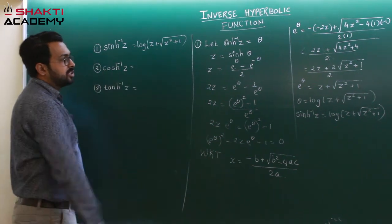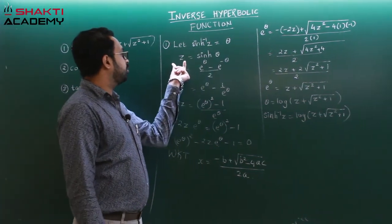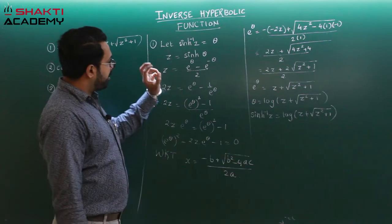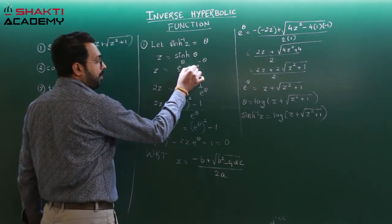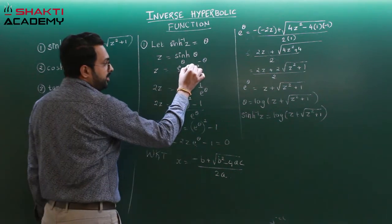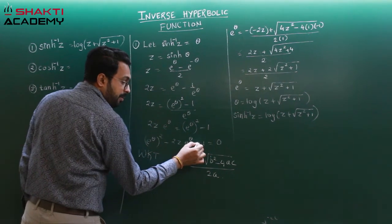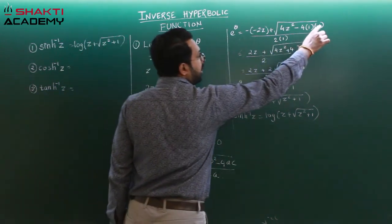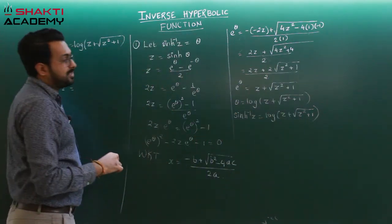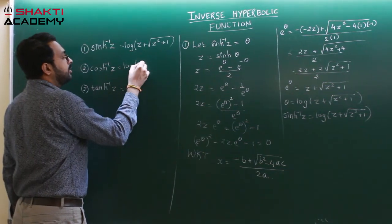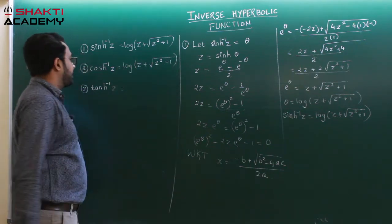Now for cos hyperbolic inverse, we start the same way: cosh⁻¹(z) = theta, so z = cosh(theta). The difference between sine and cosine hyperbolic is that in sine there is a minus sign, while in cosh there is a plus sign. So throughout the calculation, all signs become plus, and c's value becomes plus 1 instead of minus 1, giving minus inside the root. So the answer is log(z + √(z² - 1)).